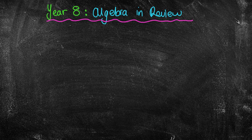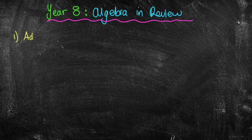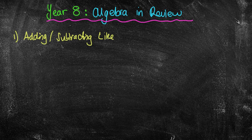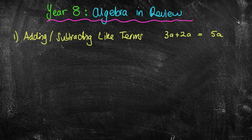Good morning guys, welcome to today's lesson. We're looking at some algebra in review, just recapping what we did last term to keep algebra at the top of our mind. We need to make sure that this year we are perfect with our algebra. We'll be looking at adding and subtracting like terms — that was really important from last term. Things like 3a plus 2a equals 5a.